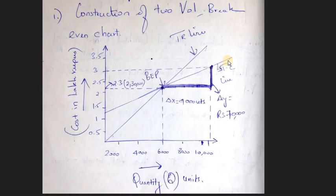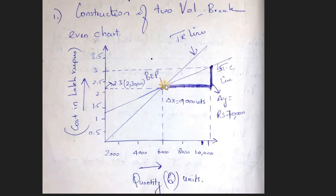So here we have a point. If you look at it, starting at 1.5 point, this is the total cost line. The top line is the total revenue line. Where these two lines intersect, that point is the break-even point — where no profit or no loss occurs; it is a stable position.